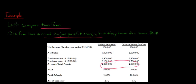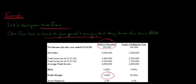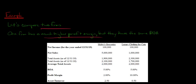In this example, they both have the exact same assets, yet Moby's Groceries has $5 million in sales and Luxury Clothing for Cats has $1 million. Why does that matter? Think about it — if Moby's Groceries has a very low profit margin, they're not making much profit every time they have a dollar in sales, but they have a lot more sales. This is kind of the nature of the industry: if you think about a grocery store, a lot more people are coming in and buying groceries in any given hour than there are people buying luxury clothing for cats.